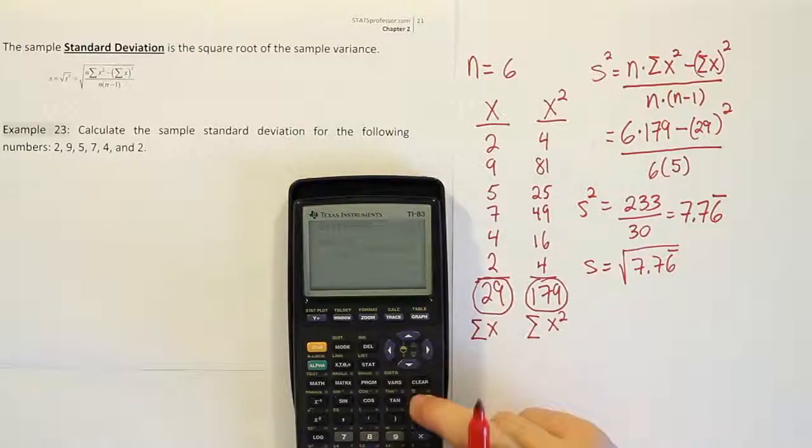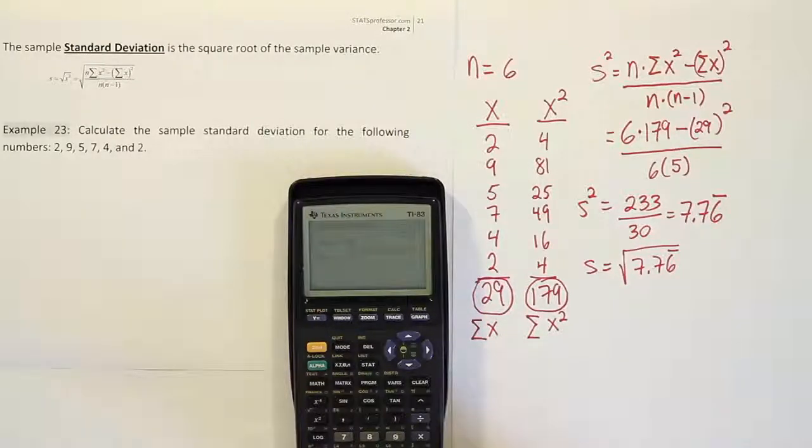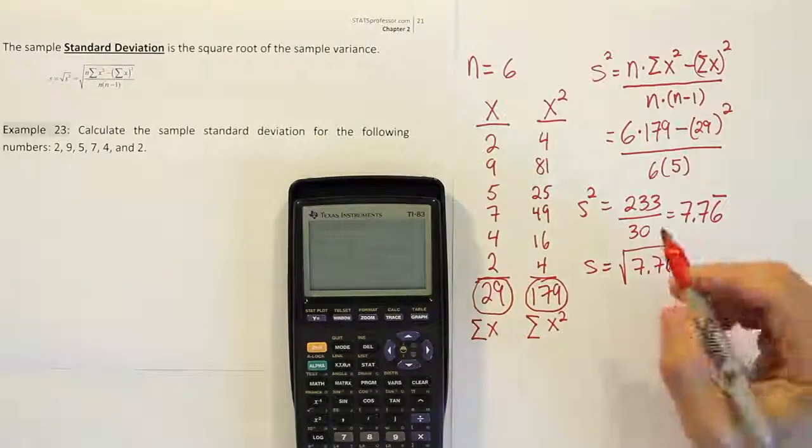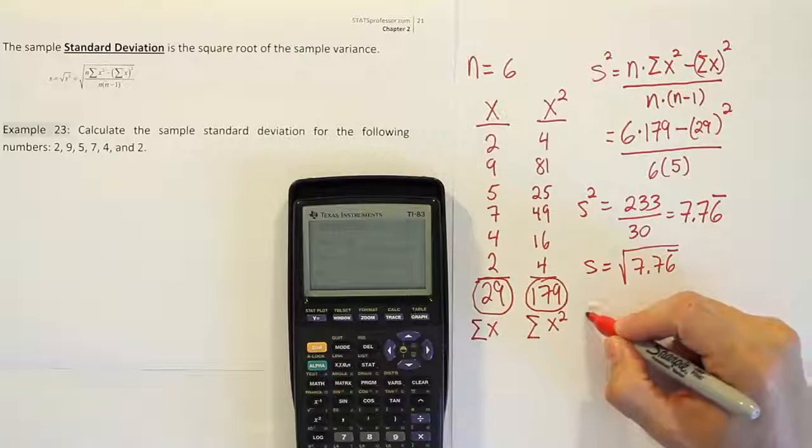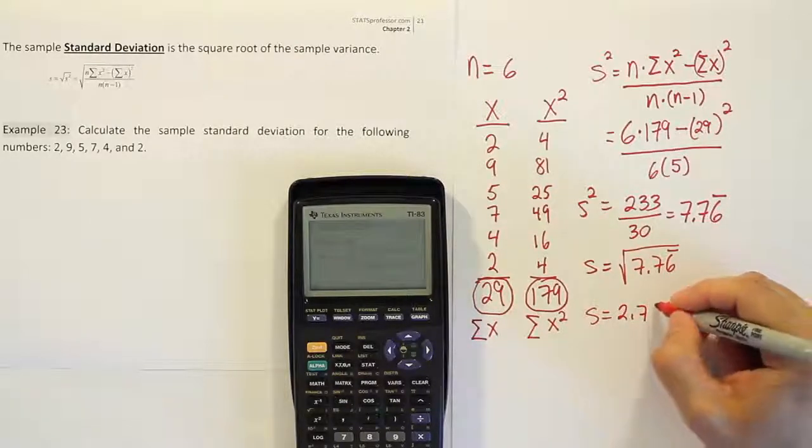Alright, so I'm just going to raise my answer that's in my calculator to the half power. If you raise the number to the half power, it's the same as taking the square root. And we get the answer then for s, 2.787.